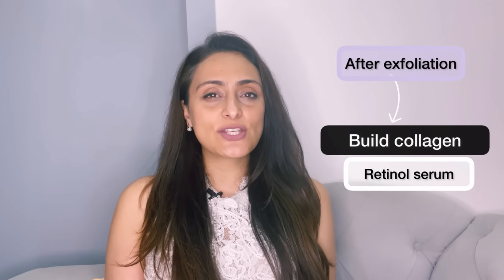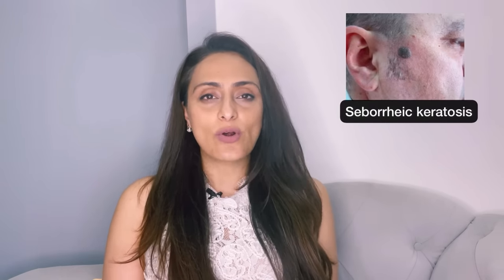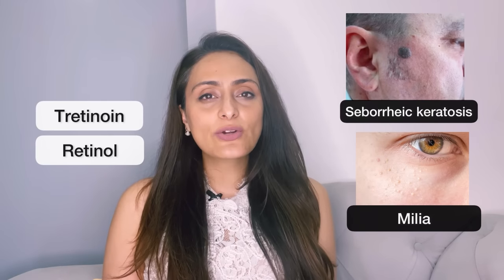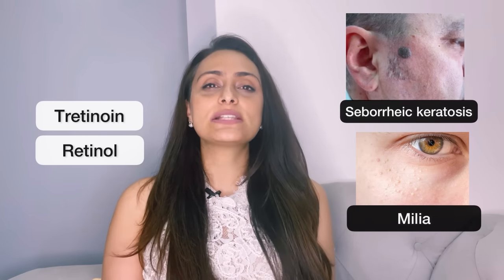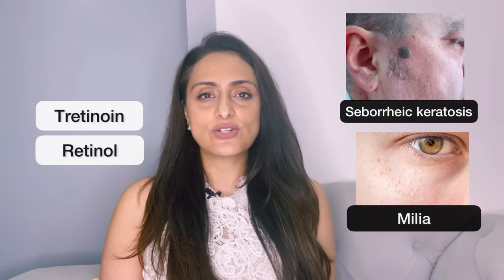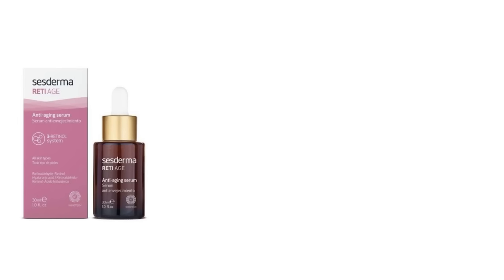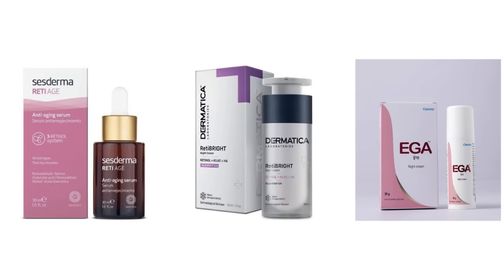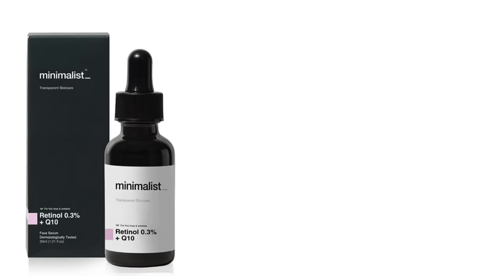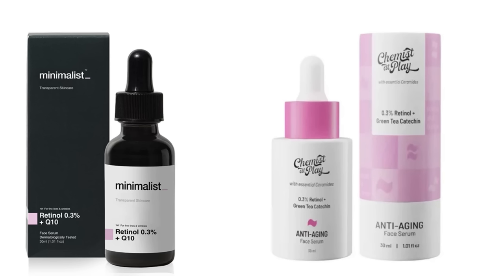After exfoliating and taking care of the dead skin layer, we want to build collagen, so use a retinol serum. Retinol helps improve texture by building collagen and increasing cell turnover, and reduces small growths on the skin surface. For seborrheic keratosis or milia, using tretinoin or retinol can reduce the size of lesions and recurrence. Recommendations for retinol creams are Reti-H by Sesderma, Domatica retinol cream, and Ega by Q Ratio. For dry skin, use Minimalist Retinol or Chemist At Play Retinol with Green Tea Extract.